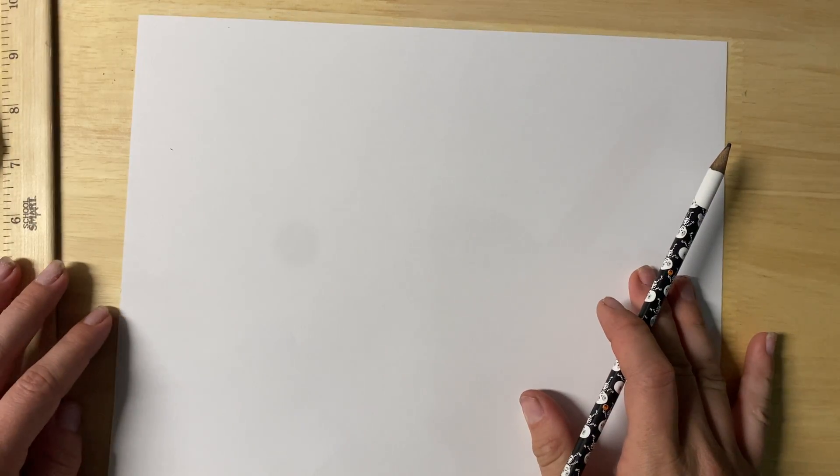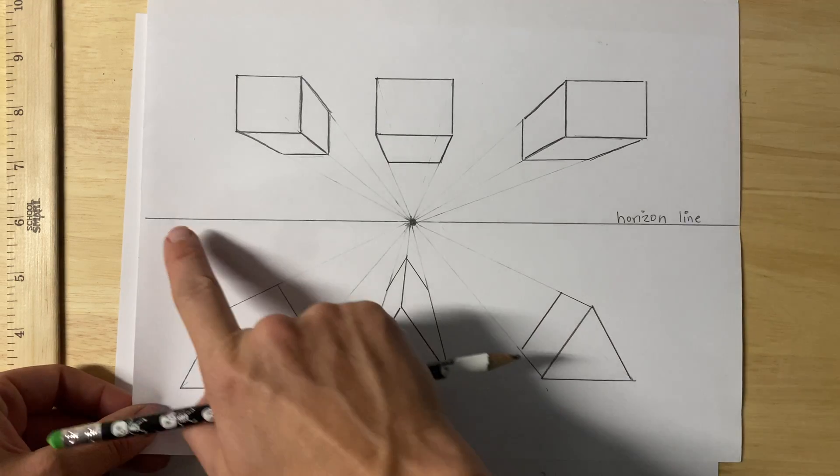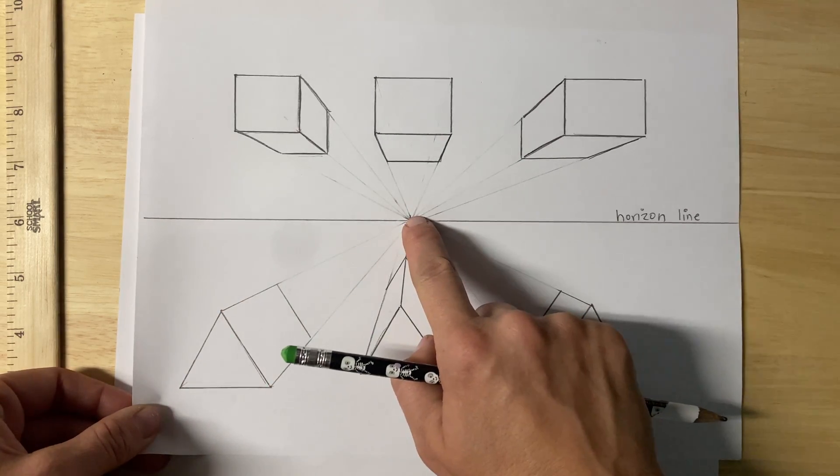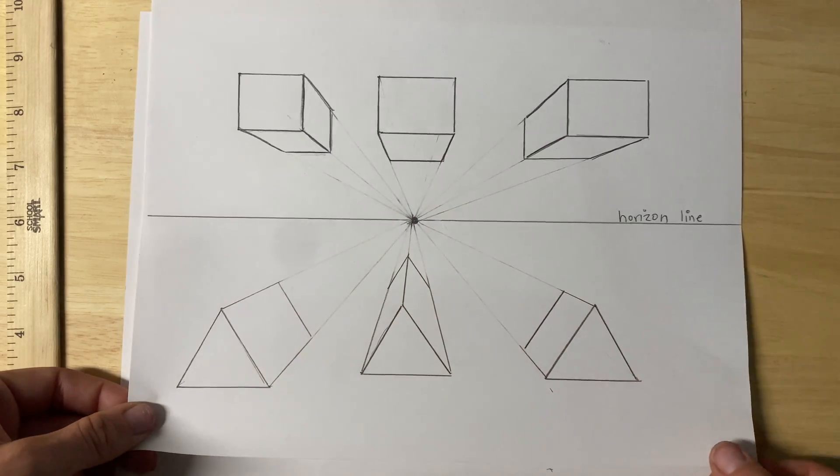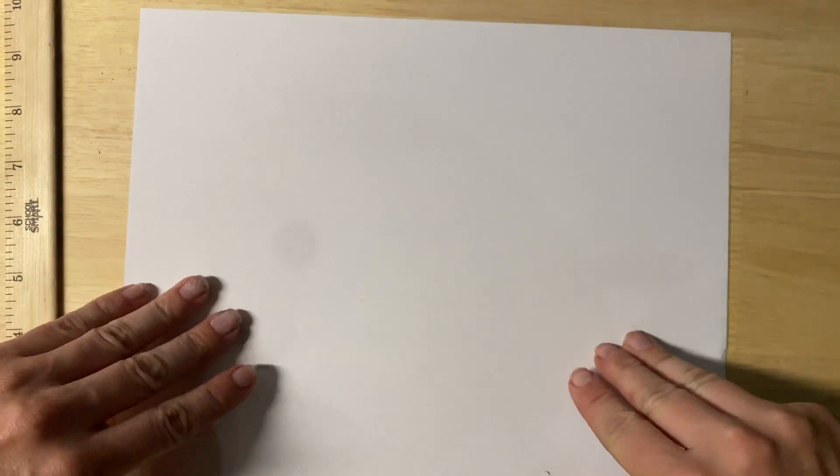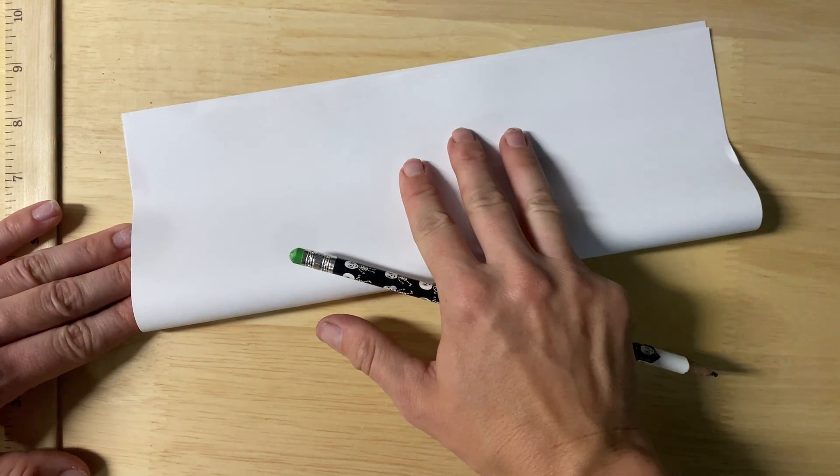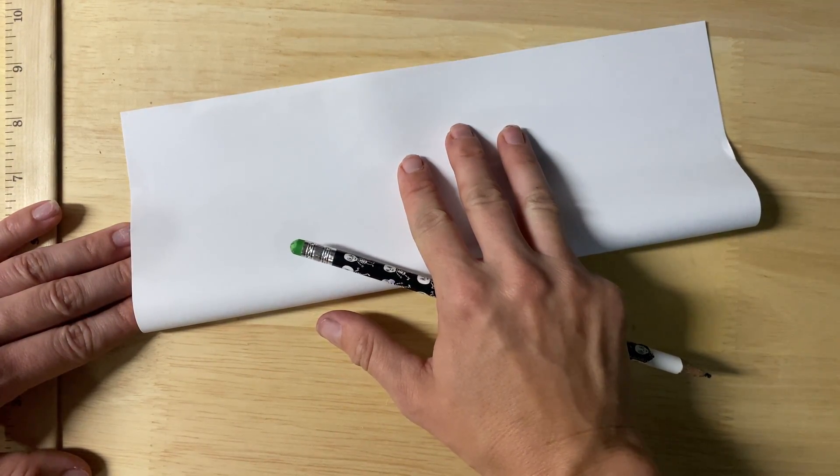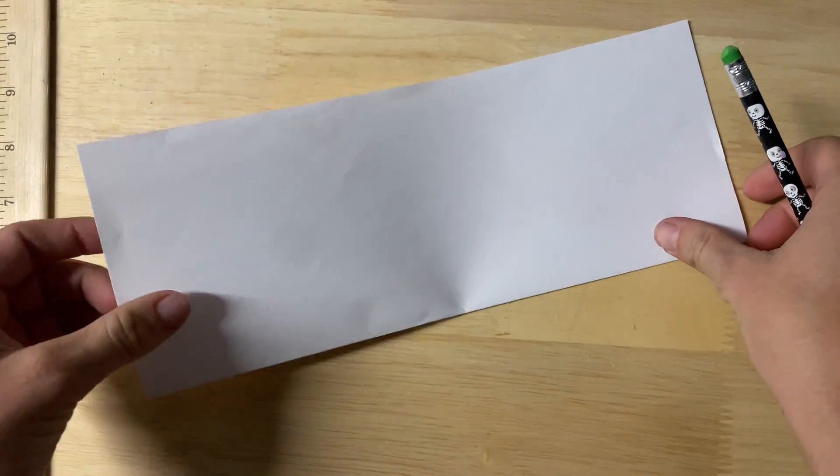We're first going to make our horizon line. We'll be making something like this, a nice clean horizon line with a vanishing point. We're going to be drawing some shapes, all angling to our vanishing point. First I'm going to fold my paper in half, that way I know right where the middle is, put a nice crease, and I know it's straight.